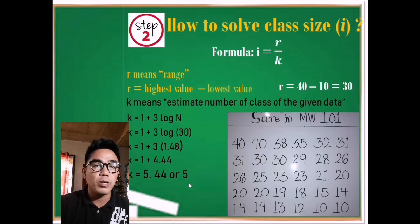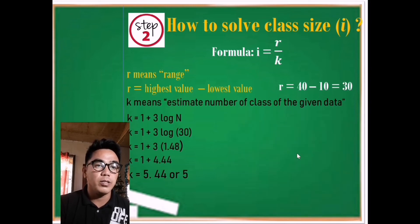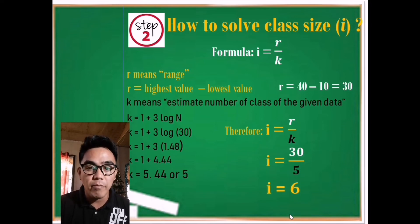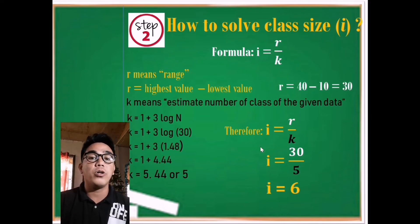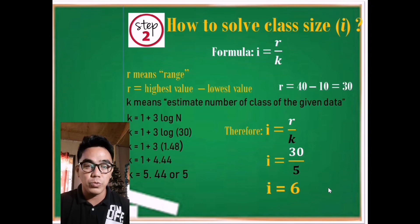So right now, we're able to get the range as 30 and k is 5. Then we're able to solve the class size when the given is in the raw score. Okay, so let us bring down the formula. R is 30, k is 5. Substitution: then 30 divided by 5 is 6. We have the same class size as we solved from the frequency distribution or the data in our raw score.